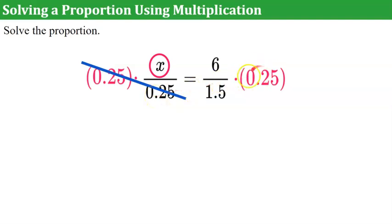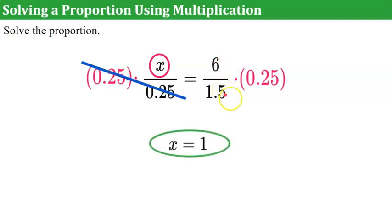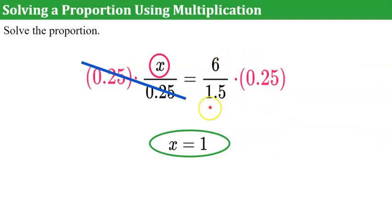0.25 divided by 0.25 is x, because this equals 1. Over here, 25 hundredths simplifies to one fourth. One fourth of 6 is 1.5, and 1.5 divided by 1.5 is 1. I allow my students to use a calculator in this, because it's more important that you understand how to solve the proportion and the understanding of a proportional relationship. We've already practiced using multiplication and division with rational numbers in previous lessons, so hopefully you're allowed to use a calculator as well.